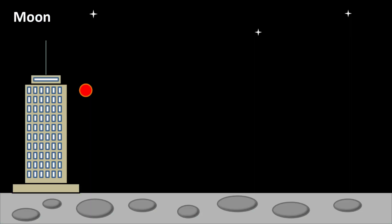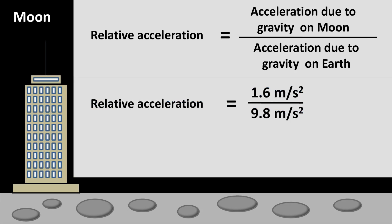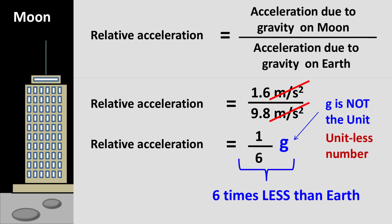Let's assume that you drop an object on the Moon. In this case, the object will accelerate at 1.6 meters per second squared. Now let's compare this acceleration with acceleration due to gravity on Earth. The relative acceleration can be calculated as the ratio of acceleration due to gravity on Moon divided by acceleration due to gravity on Earth. If we substitute the values, it becomes 1.6 divided by 9.8 meters per second squared, which comes to 1/6. The unit meters per second squared cancels on both sides. As a result, the value 1/6 is a unitless number. However, it is expressed as 1/6g. Remember, g is not the unit — it simply says the relative acceleration on Moon is 6 times less than that of Earth.